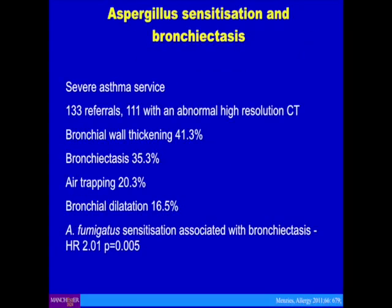Looking at a severe asthma service in Manchester, with about 250 very difficult asthmatics per year, many had bronchial wall thickening, about a third had bronchiectasis, some air trapping and bronchial wall dilatations. There was a clear association between aspergillus sensitisation and bronchiectasis. So there's this association with severe asthma, but also a specific association with bronchiectasis.